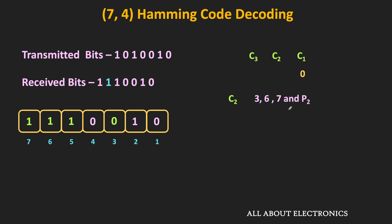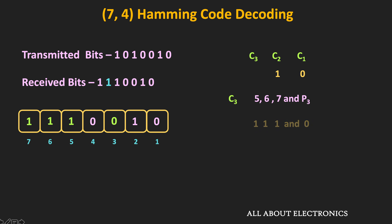Similarly, parity check bit C2 represents the overall parity of bit numbers 3, 6, 7, and P2. In this case the overall parity is odd, so C2 equals 1. Likewise, check bit C3 represents the parity of bit numbers 5, 6, 7, and P3. The bits are 1, 1, 1, and 0. Since the overall parity of these 4 bits is odd, C3 is set to 1. That means C3, C2, C1 are 1, 1, 0. In binary, 110 corresponds to 6, which means there is an error in bit number 6.